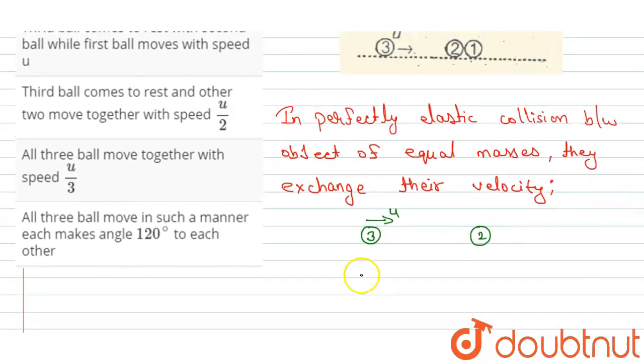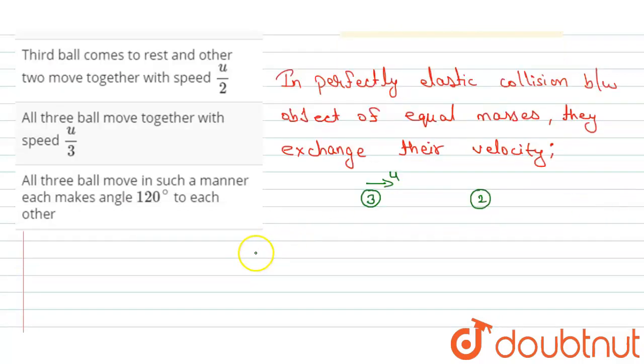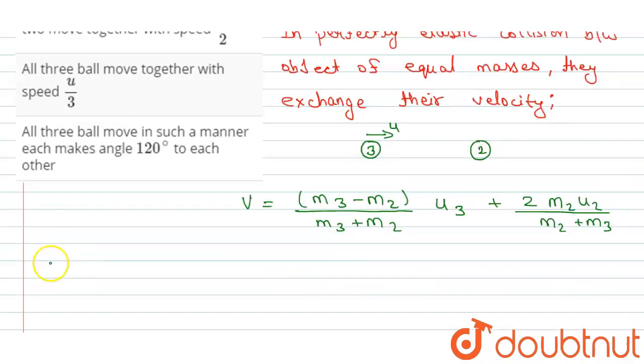So the velocity of ivory ball after collision with second ball will be equal to m3 minus m2 divided by m3 plus m2 into u3, here u3 is the velocity of third ball, plus 2 m2 into u2 divided by m2 plus m3. So the third ball, we can write, the third ball came to rest.